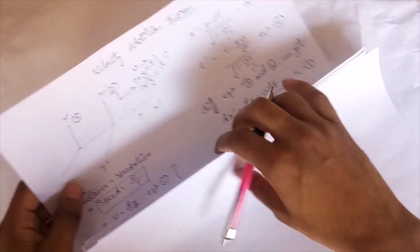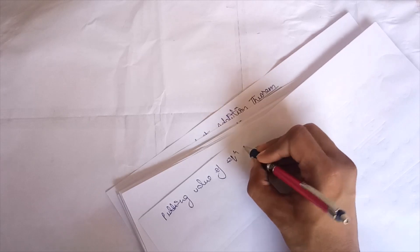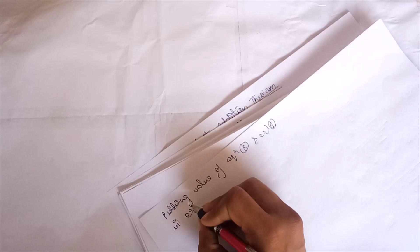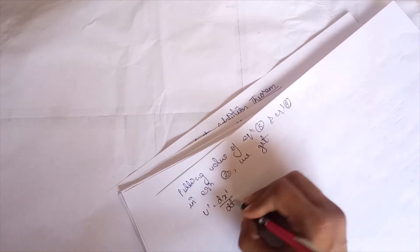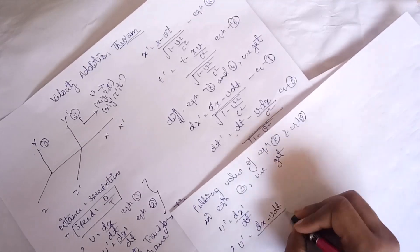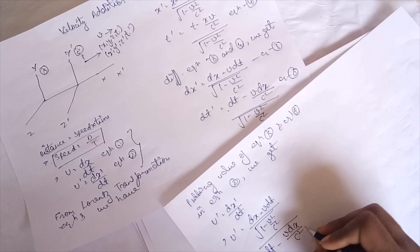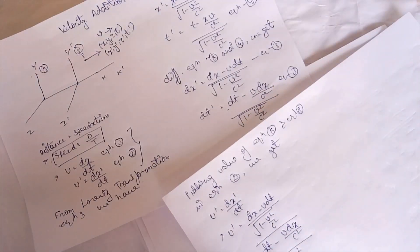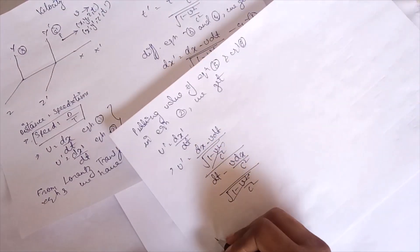Now putting the values of equations 5 and 6 into equation 2, which is u-dash = dx-dash / dt-dash, we get: u-dash = (dx − v·dt) / √(1 − v²/c²)  divided by  (dt − v·dx/c²) / √(1 − v²/c²). The √(1 − v²/c²) denominators are the same, so they cancel, and we are left with u-dash = (dx − v·dt) / (dt − v·dx/c²).